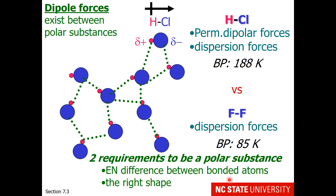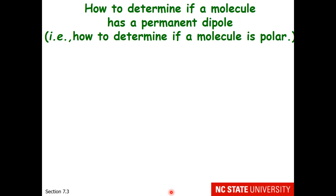There are two requirements for a molecule to be a polar substance. First, electronegativity differences are needed between bonded atoms, but the shape of the molecule is also important. Here is how to determine if a molecule has a permanent dipole — that is, to determine if a molecule is polar.